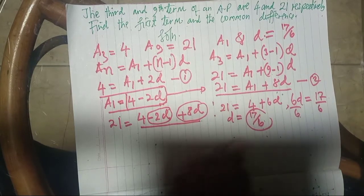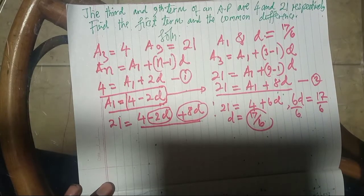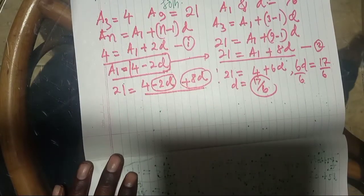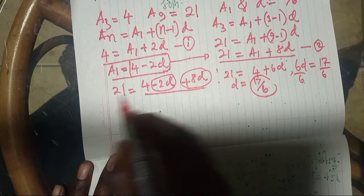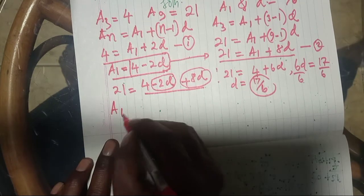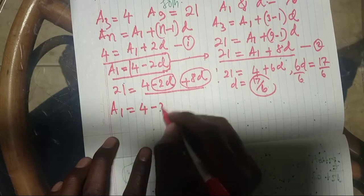Now we have found D. After we have found the value of D, what next? What I have to do is find the value of A1. So now I will choose the equation, which is this one here, where we say A1 is equal to 4 minus 2D.